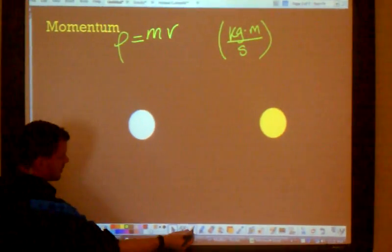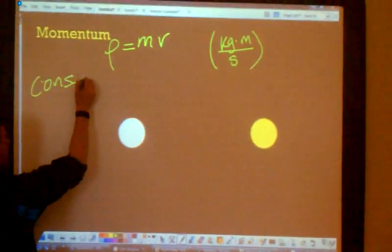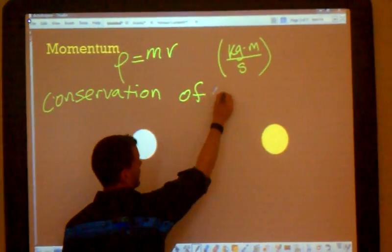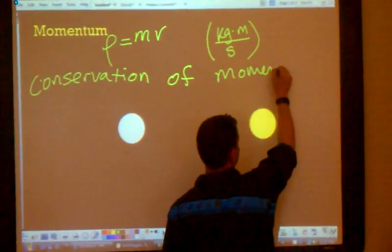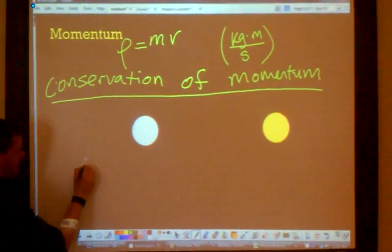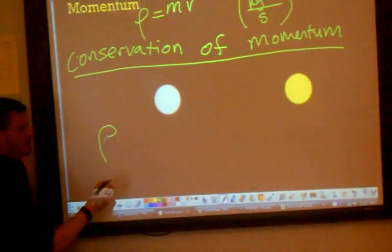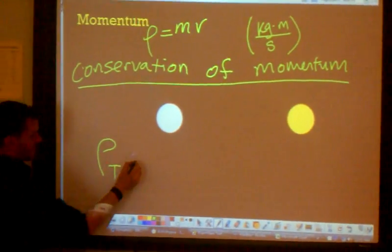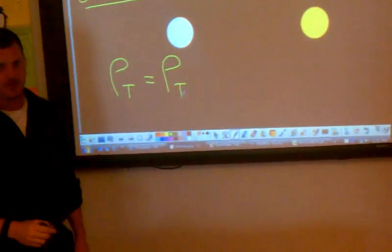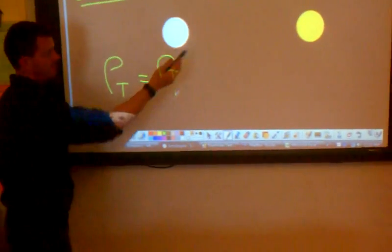So there is a conservation of momentum. Whatever momentum you start with, will be the same momentum total that you end with, before and after collision, when you add both of them together.